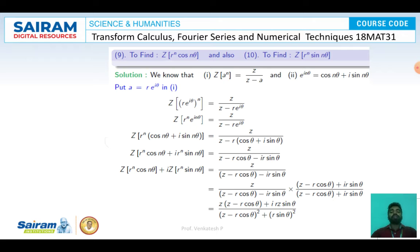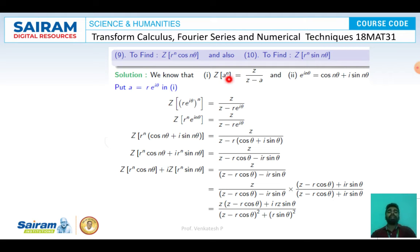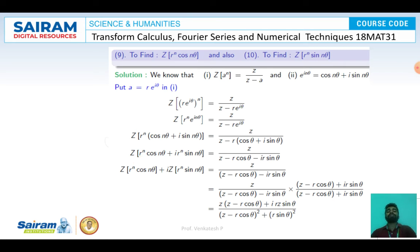For Z{r^N cos(Nθ)} and Z{r^N sin(Nθ)}, I use Z{A^N} = Z/(Z-A) and Euler's formula e^(iNθ) = cos(Nθ) + i·sin(Nθ). Replacing A = re^(iθ): Z{(re^(iθ))^N} = Z/(Z - re^(iθ)). Since r^N·e^(iNθ) = r^N(cos Nθ + i·sin Nθ), we get Z{r^N cos Nθ} + i·Z{r^N sin Nθ} = Z/(Z - re^(iθ)).